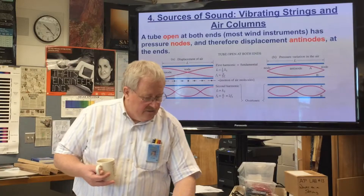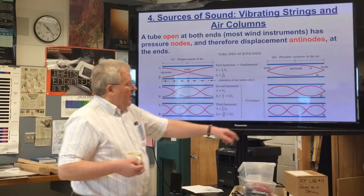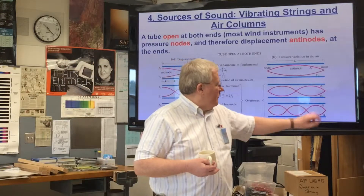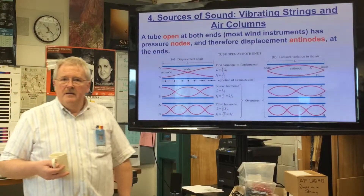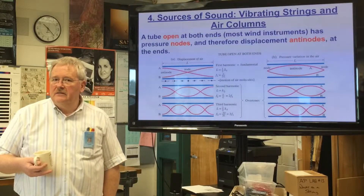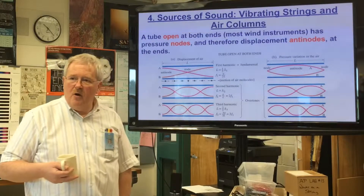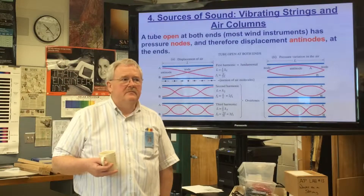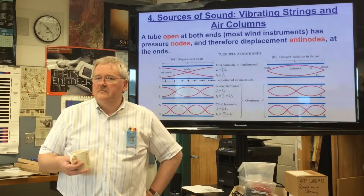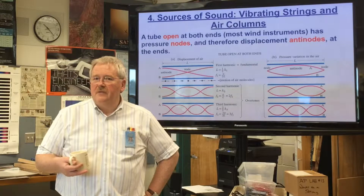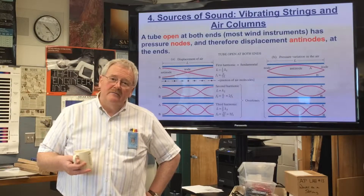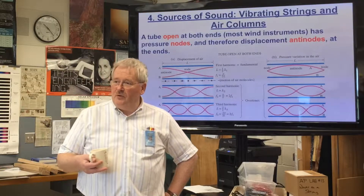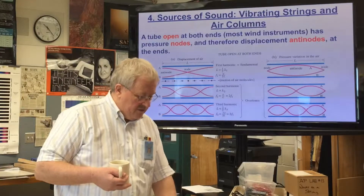For the third harmonic, we count and see we've got one and a half wavelengths. So to get the wavelength of the third harmonic, we divide the length of the tube by 1.5 — or multiply by two-thirds.